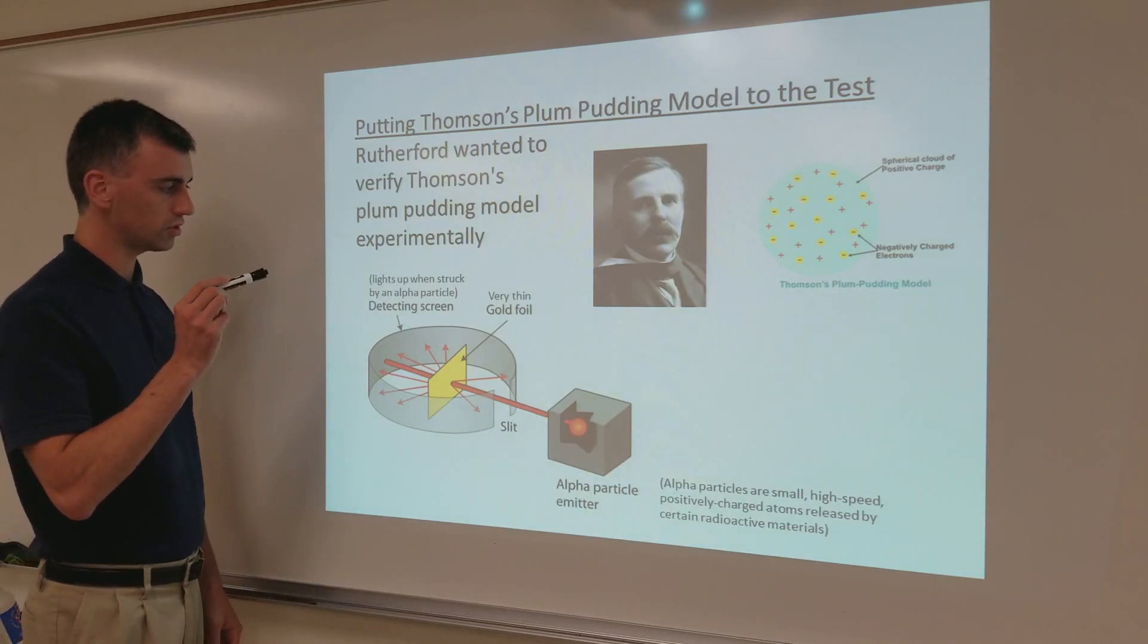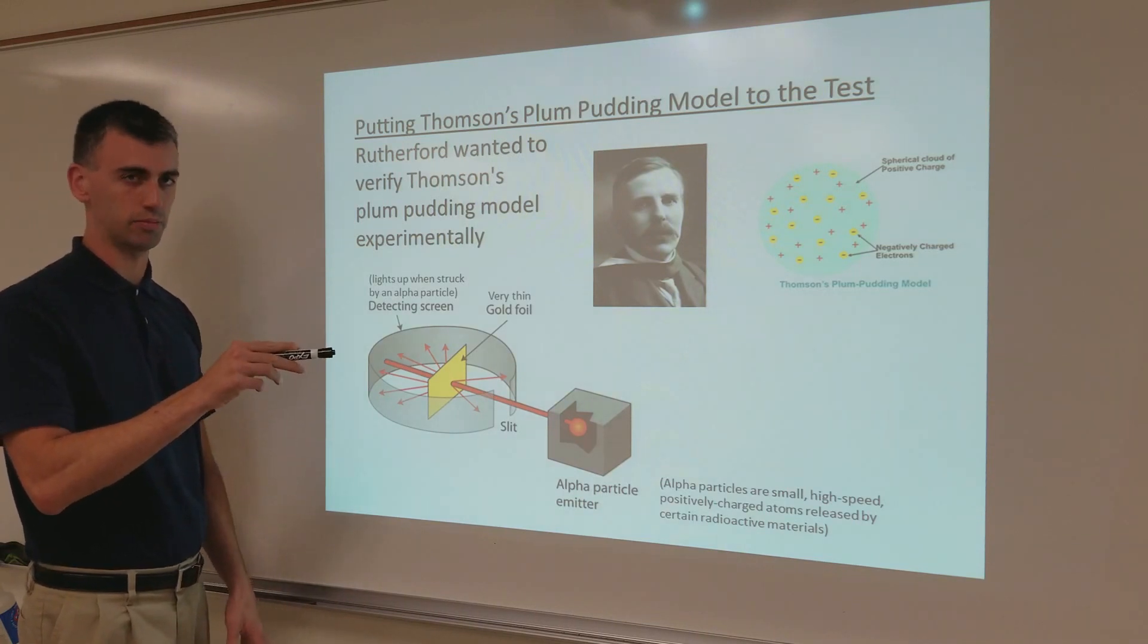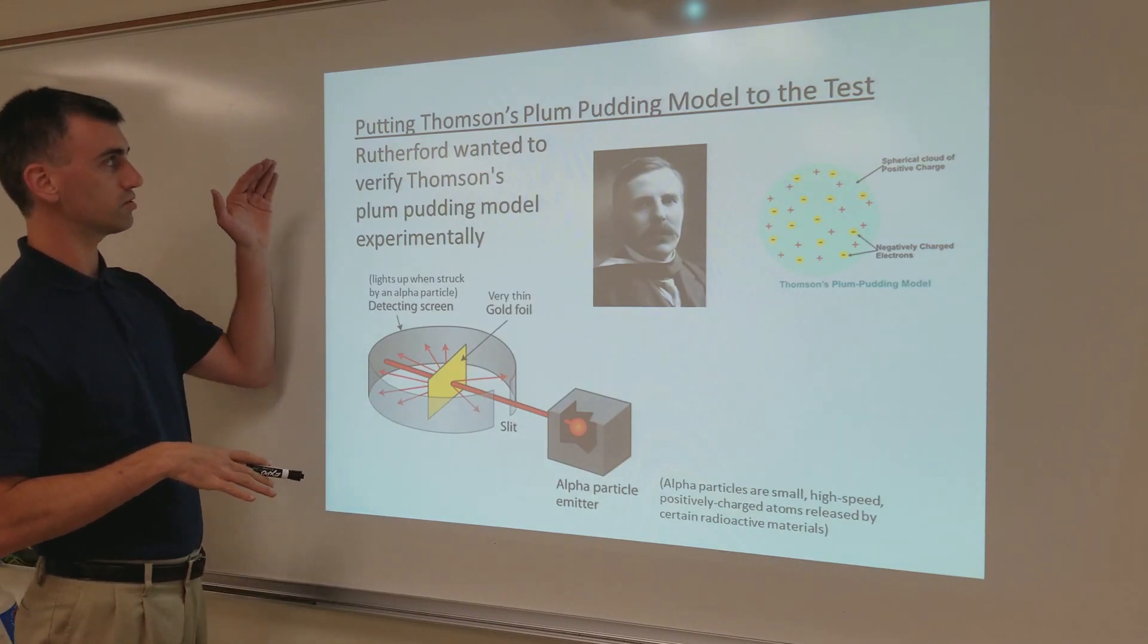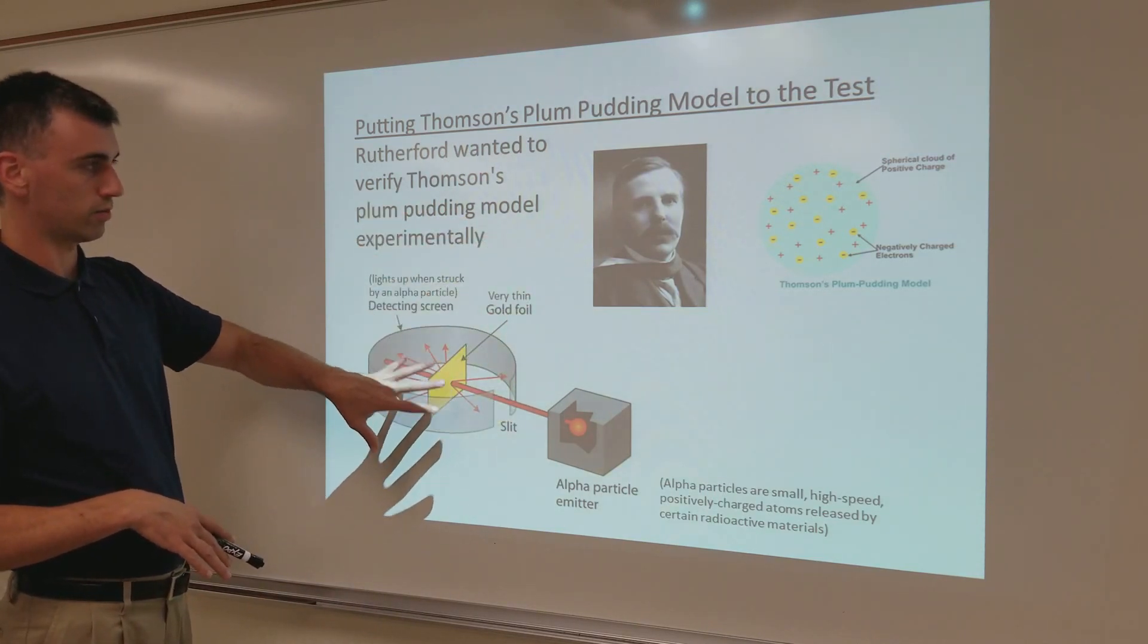So what we're looking at is the setup of what happened. I should back up a little bit. Let's look at what's being investigated. So why was Rutherford working with the Gold Foil Experiment? What's going on here?